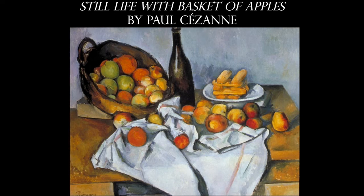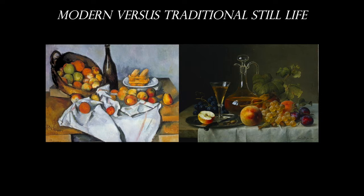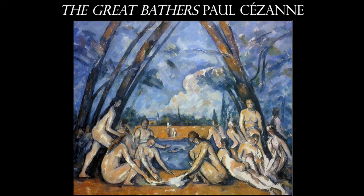Cézanne applied to the School of Fine Arts in Paris but was turned down. He attended the Académie Suisse. His father wanted him to be a banker, but he pursued art instead. His still life paintings are so different from traditional still lifes because he painted them from different points of view — the left side of the table appears lower than the right, a wine bottle looks like it's tipping over, and apples look ready to fall off the table. This eliminates the idea of linear perspective, making the work very flat and focused on spatial planes.